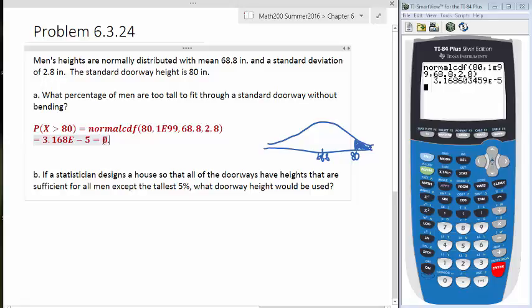So essentially what we'll have is a decimal point, and then 4 zeros, and then the 3, 1, 6, 8. So this is a really, really, really small number.